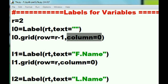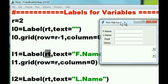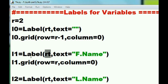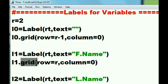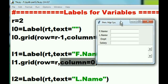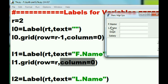The next one is label1 — I tell the Label function to put itself into the rt window structure with the text 'f_name', and assign that to l1. Then l1 puts itself into the grid at row r, which is row 2, column 0. First name, f_name, is in row 2, column 0.